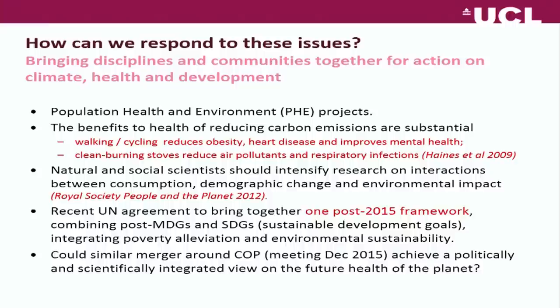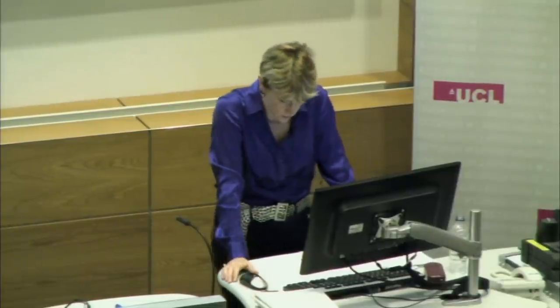Natural and social scientists need to intensify research on the interactions between consumption, demographic change, and environmental impact — things like how ageing and urbanisation will affect carbon dioxide emissions. The Royal Society's report People and Planet is a very readable and expert resource. There are some encouraging signs: the UN General Assembly has agreed to bring together the Millennium Development Goals and Sustainable Development Goals frameworks around poverty alleviation and environmental sustainability. If the next COP meeting in December 2015 could achieve a similar merger around carbon emissions, we might get to a more politically and scientifically integrated view on the future health of the planet.